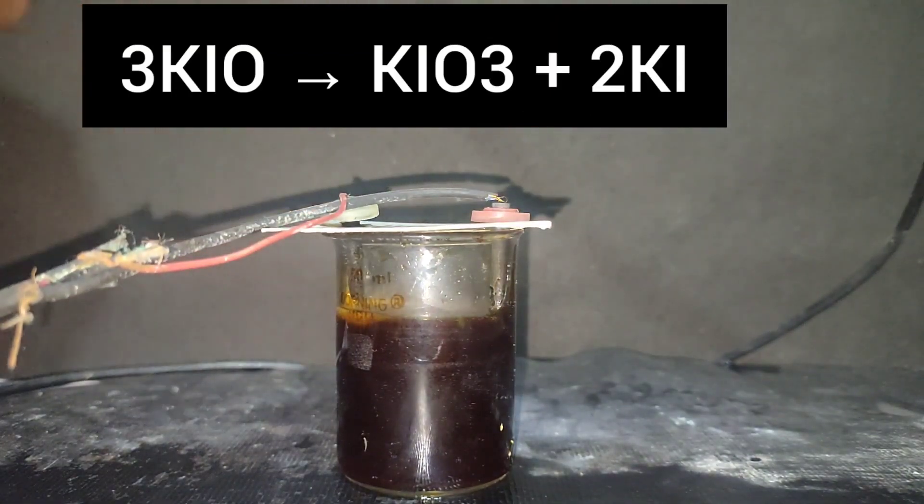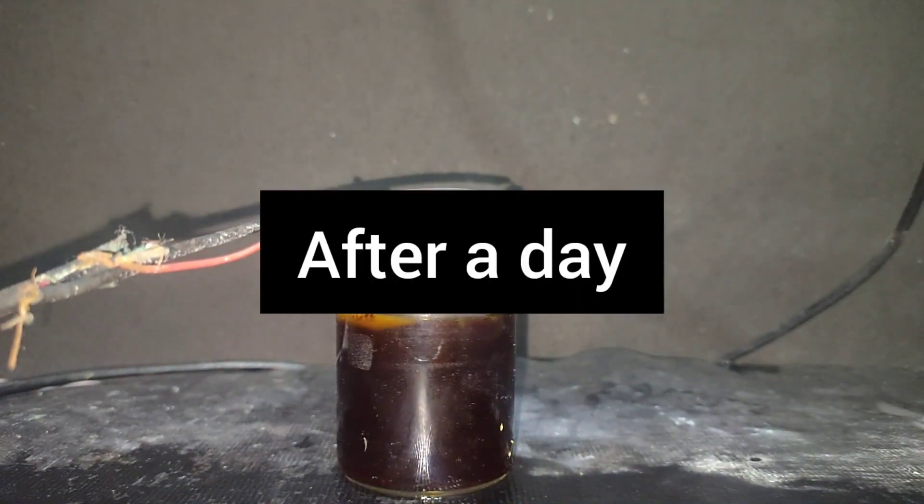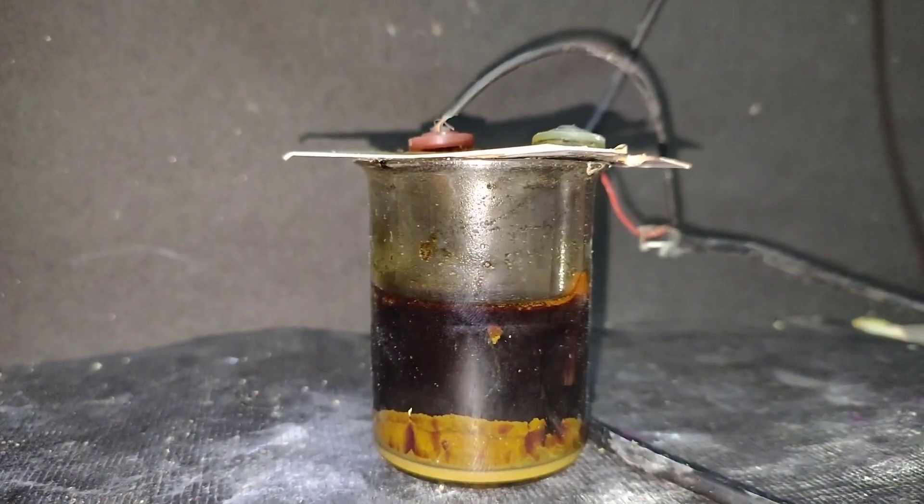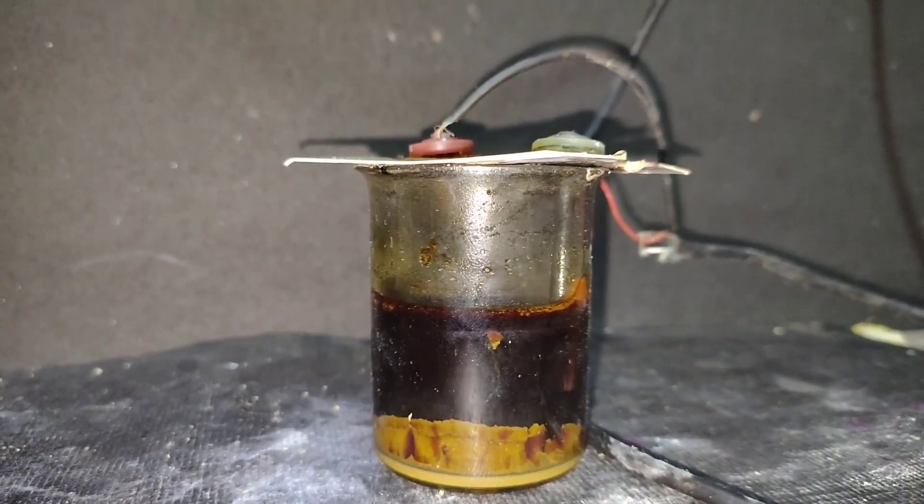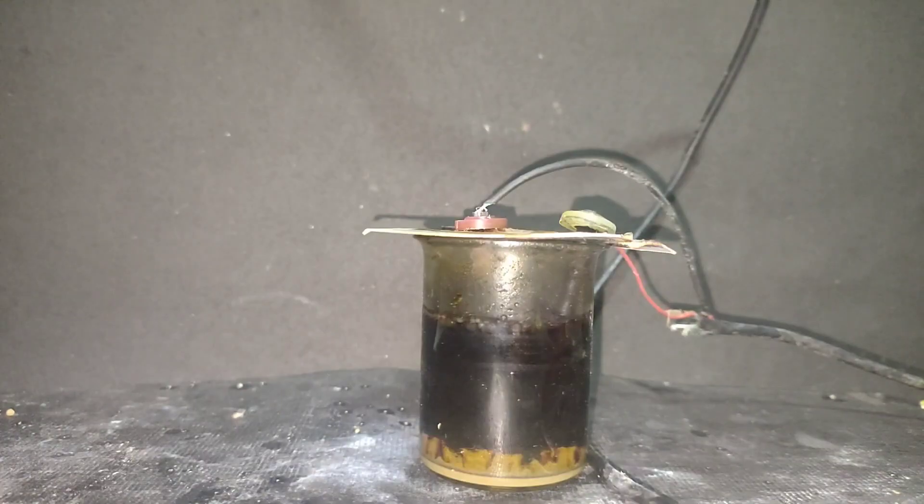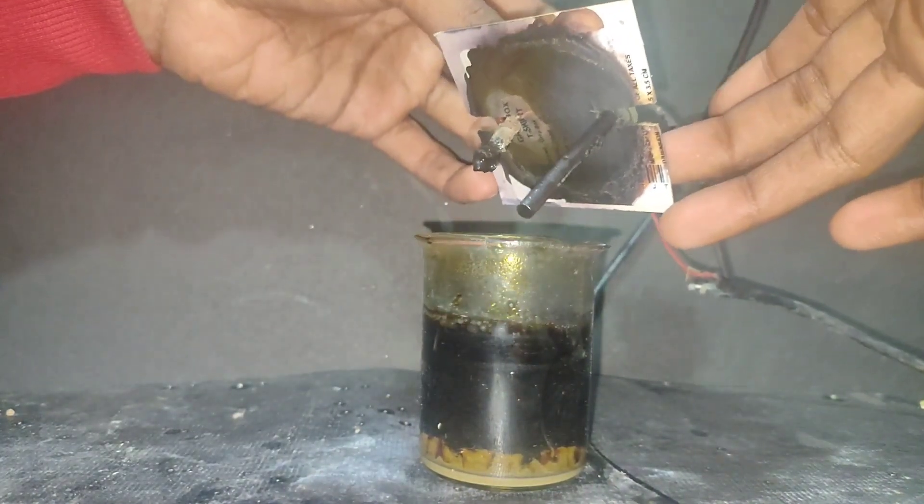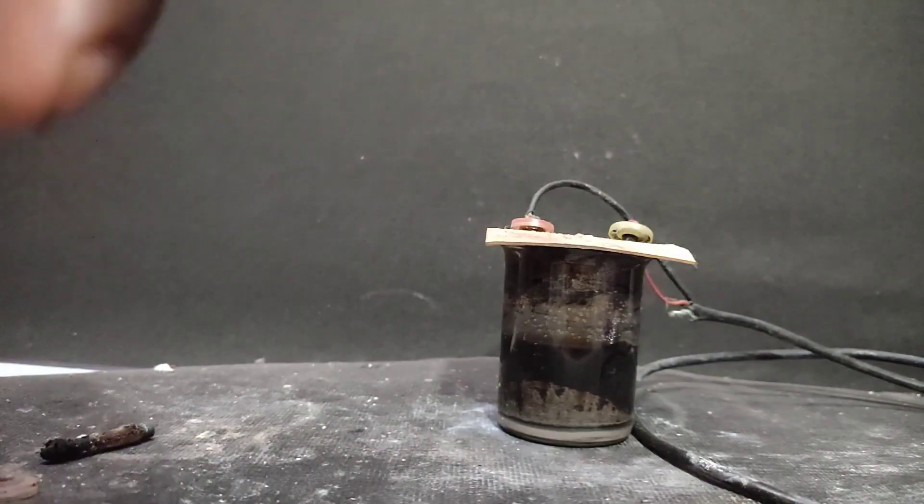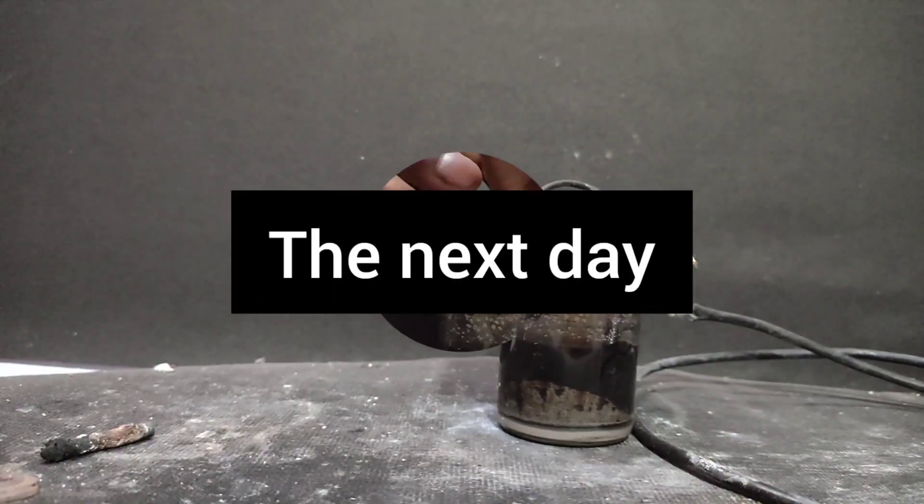The potassium iodate formed settles at the bottom due to low solubility. After a day, some crystals were seen at the bottom of the beaker, but when I checked the electrodes, the anode had disintegrated completely.